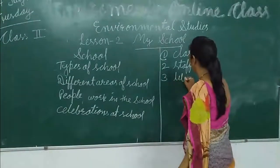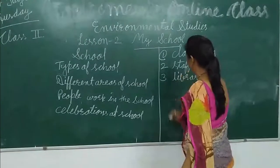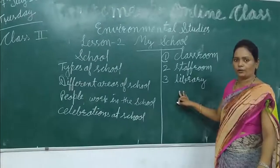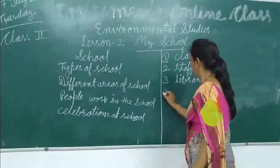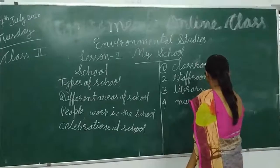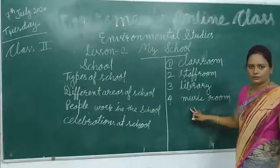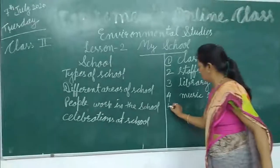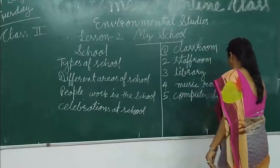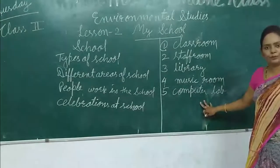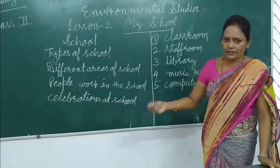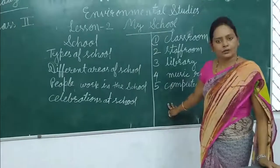Number three is the library. Library is the place where we go for reading and we can borrow books from the library. Number four is music room. In the music room, we go to learn music. Number five is computer lab. In the computer lab, we go for our computer practicals. There is an auditorium also in the school where all the functions are held. And there is the reception counter where parents go to submit the fee.